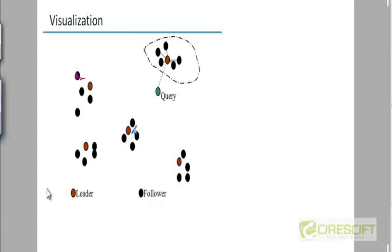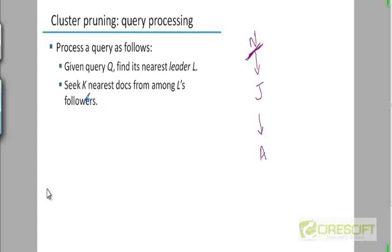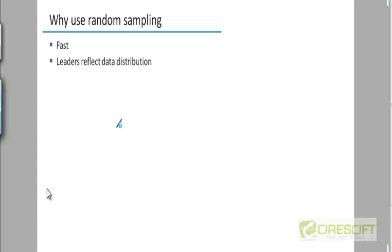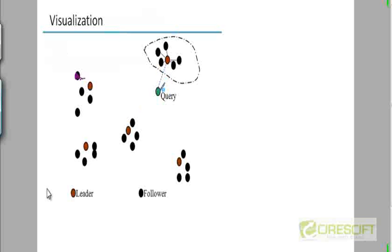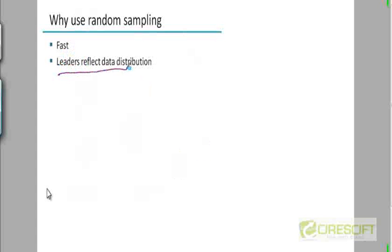There is a separate chapter on clustering later on. Why do you use random sampling? Choosing square root of n random numbers is relatively fast, and the leaders that are chosen will reflect the data distribution. Choosing a random set of documents means you'll be able to detect which cluster is actually closest to the query, and it's definitely fast.